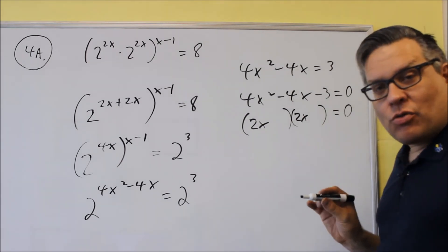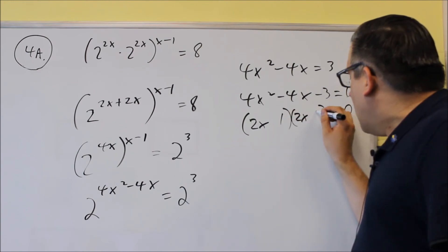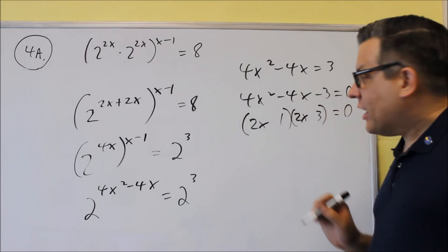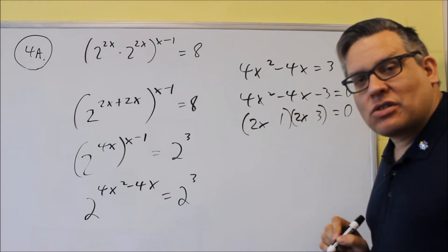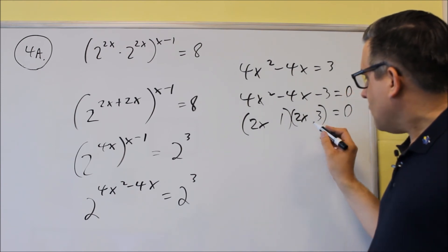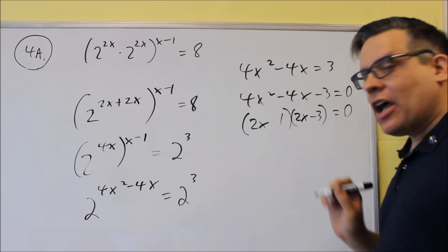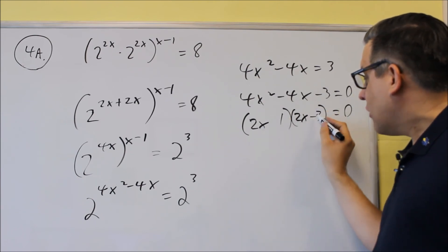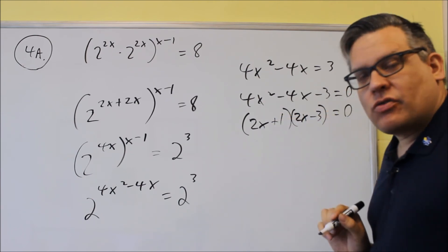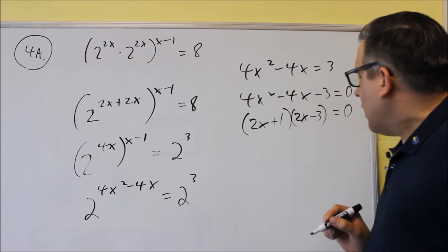The last number is a 3, and so I'm going to use the factors 1 and 3, but now I have to just make sure I get the signs correct here. So I want to get a negative 4 in the middle, which means that this number is going to have to be negative. So that way I get negative 6 and positive 2, and that will give me a negative 4.